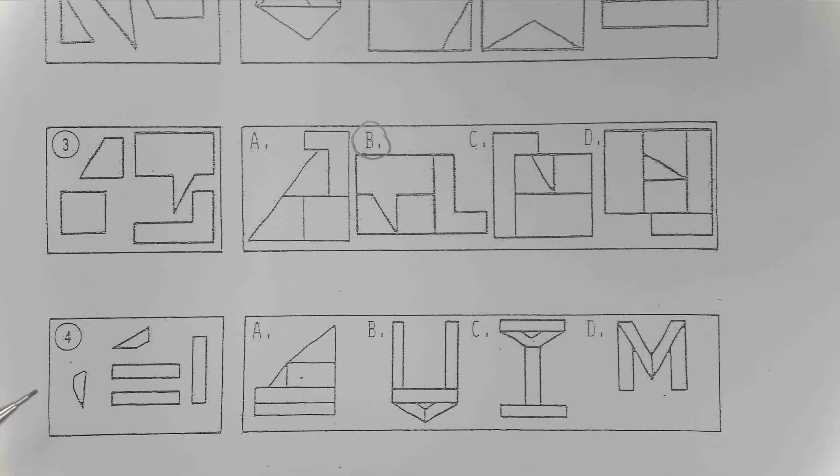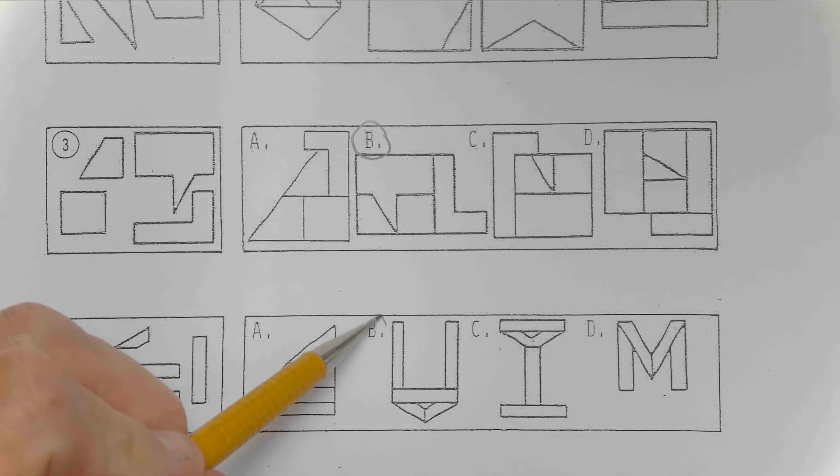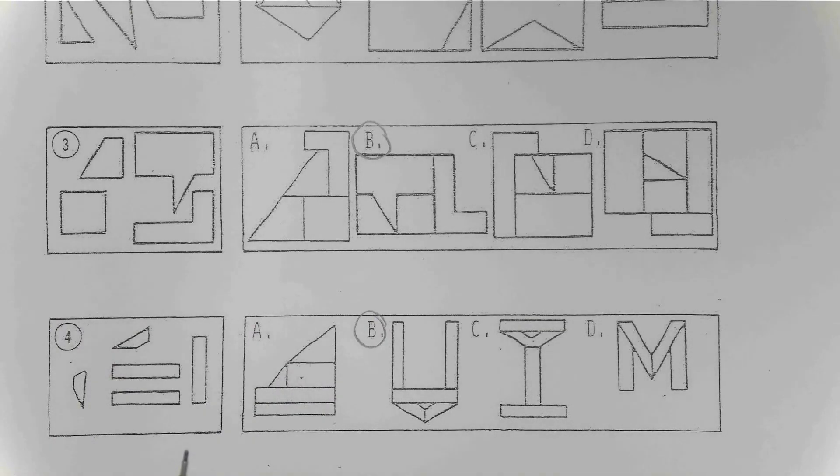Then number four. Which of those four-lettered items matches the box with the four in it? And that's going to be selection B. Okay?